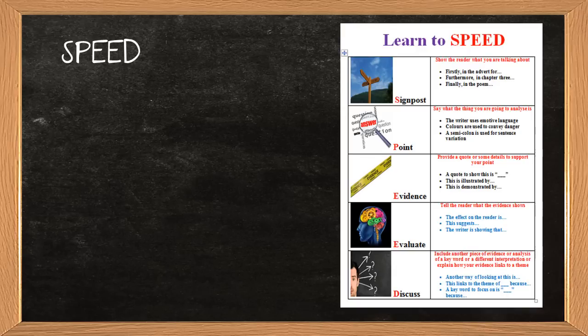Then you make a point about what you're going to analyze. So this is where you pick out the language devices, and you say what language feature is it that they have used. You put your evidence in, try and embed it nicely, use a little phrase to introduce it, a quote to show this is, or this is illustrated by. Then the evaluate and the discuss are the important bits. These are the bits that are going to get you marks.